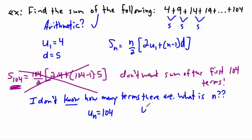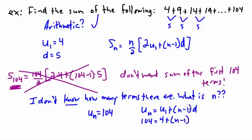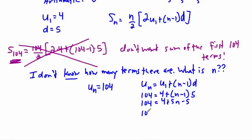I know that u_n equals u₁ plus (n minus 1) times d — that's the arithmetic sequence equation. So the nth term is 104: 104 equals 4 plus (n minus 1) times 5. Then 104 equals 4 plus 5n minus 5, which gives 104 equals 5n minus 1. Moving the minus 1 over: 105 equals 5n. Dividing: 105 divided by 5 is 21. So n equals 21.